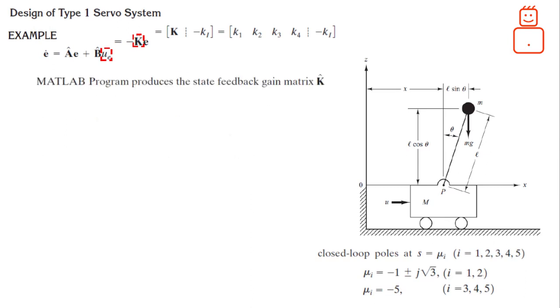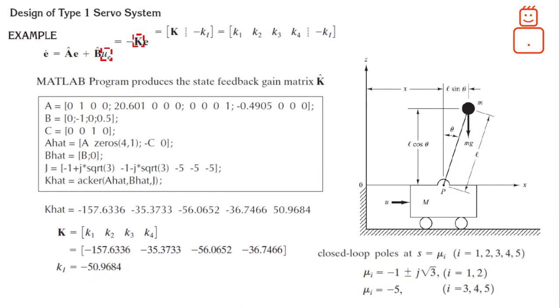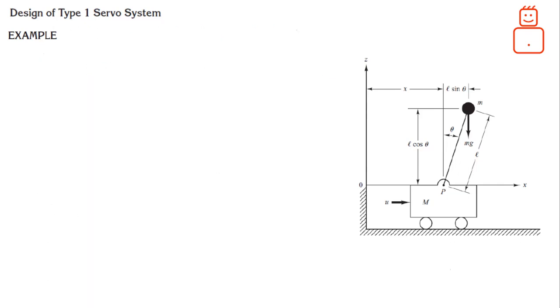The MATLAB code for producing the state feedback gain matrix K-hat is given as shown. The resulted control matrix gains are: Here, the first four values are the state feedback gains while the last gain is for the servo.